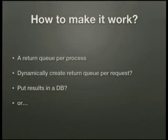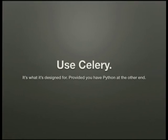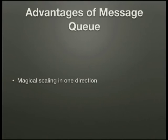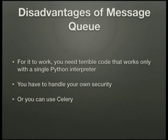How could we make this work better? Maybe a return queue per process, maybe dynamically creating a return queue per request, maybe put the results in a database and read from them. Or maybe just use Celery, because that's what it's designed for — provided you have Python code running at the other end. The advantage of the message queue is magical scaling in one direction, but for two-way communication it requires terrible code that only works with a single Python interpreter, and you have to handle your own security.